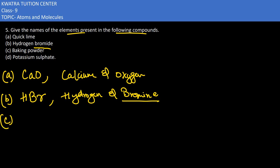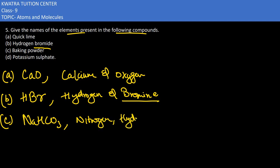Baking powder formula is NaHCO₃. In this case we have sodium, we have hydrogen, we have carbon, and we have oxygen here.